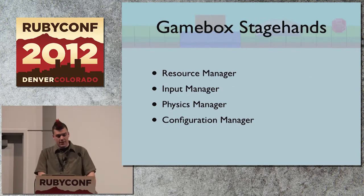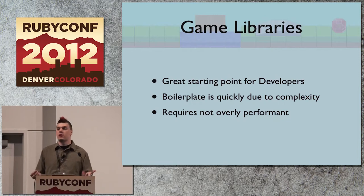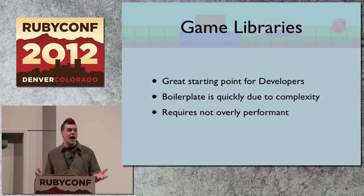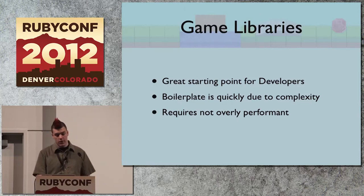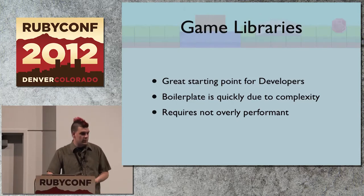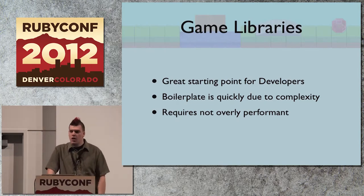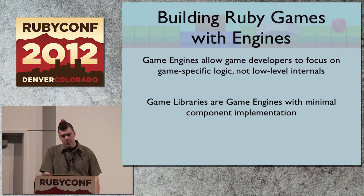In summation, game libraries are really great starting points for game developers interested in game development. There's a lot of boilerplate that gets put into them because they're designed to be primitive — easy to get into, and you don't need to know much about game development to get them going. But they're also not very performant because of how much they've abstracted out those core components. So if game libraries are a great starting point, where can we go next?